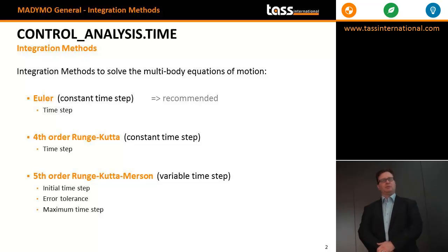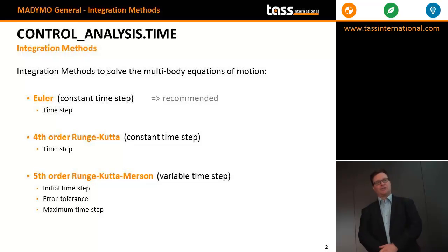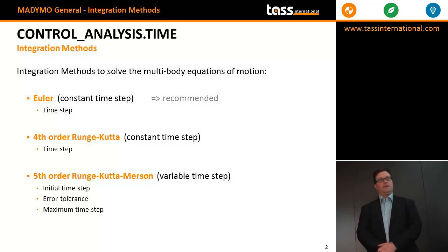Manimo gives you the possibility to select three different time integration methods. One is the Euler method, which uses a constant time step. The second is the fourth-order Runge-Kutta method, which is also a constant time step but with higher accuracy. The third is a fifth-order Runge-Kutta method, which gives you a variable time step that is adapted based on stability and accuracy calculations during the simulation.